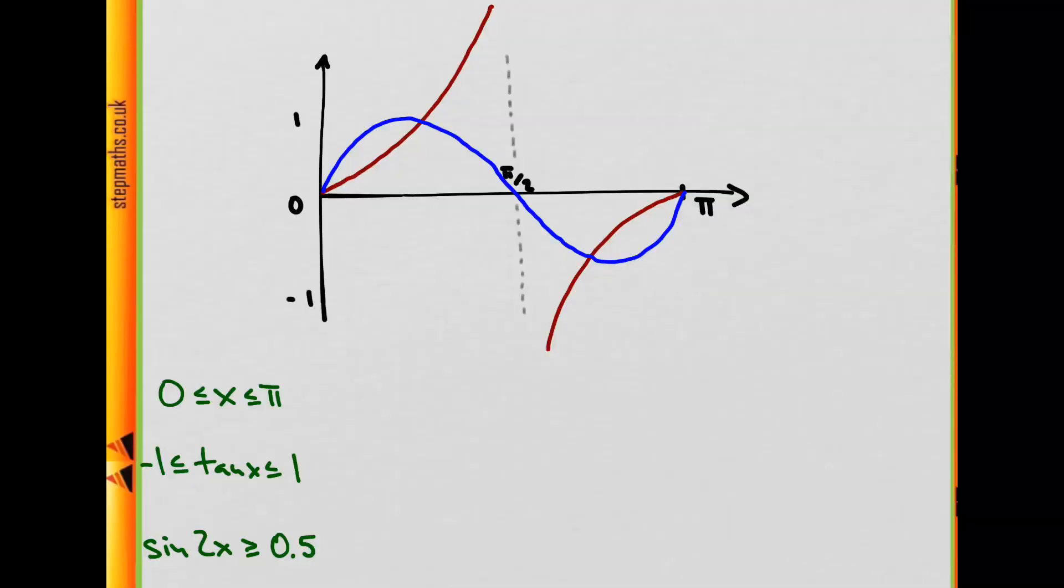And now with this graph at hand, it will be much easier to decide when which inequality is true. So let's first have a look at the first one, and that is trivially true for the interval from 0 to π. That's the entire interval which we have drawn, like this. So that's one done.